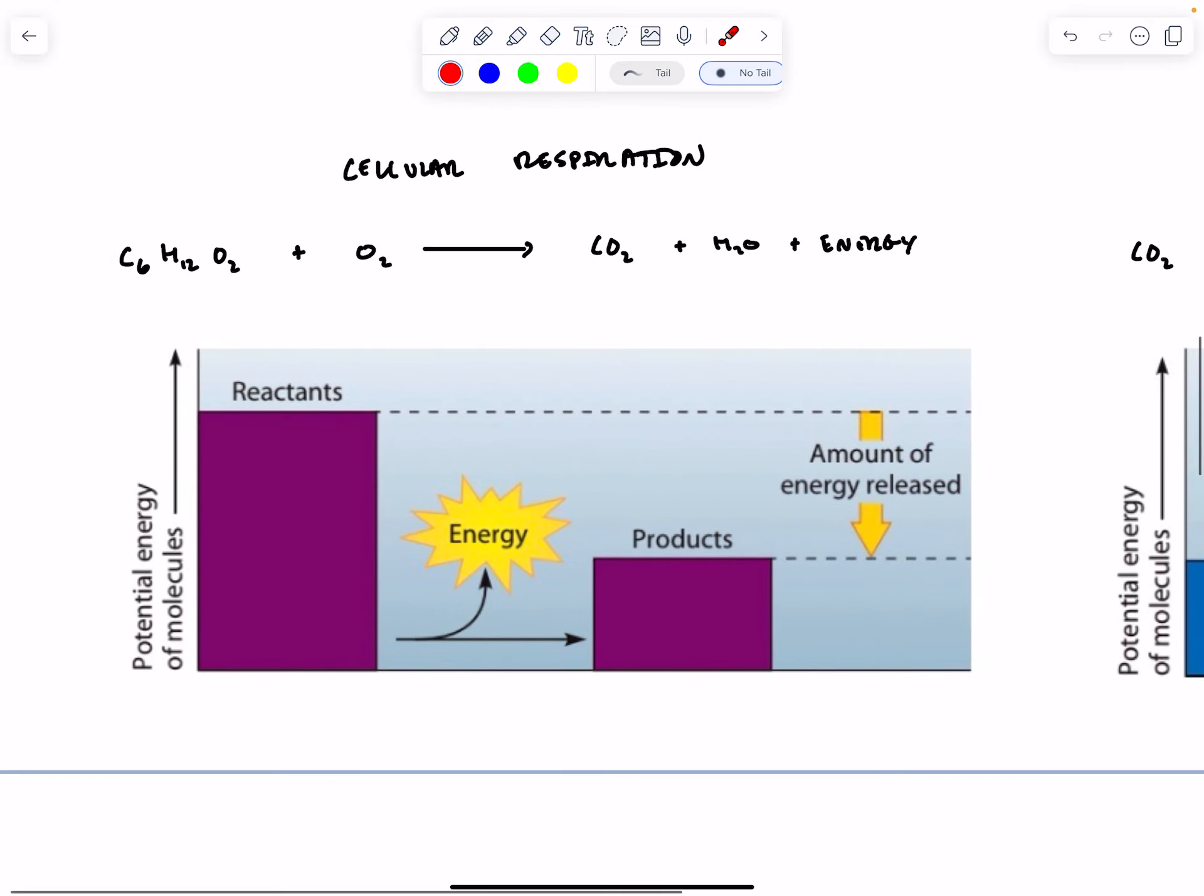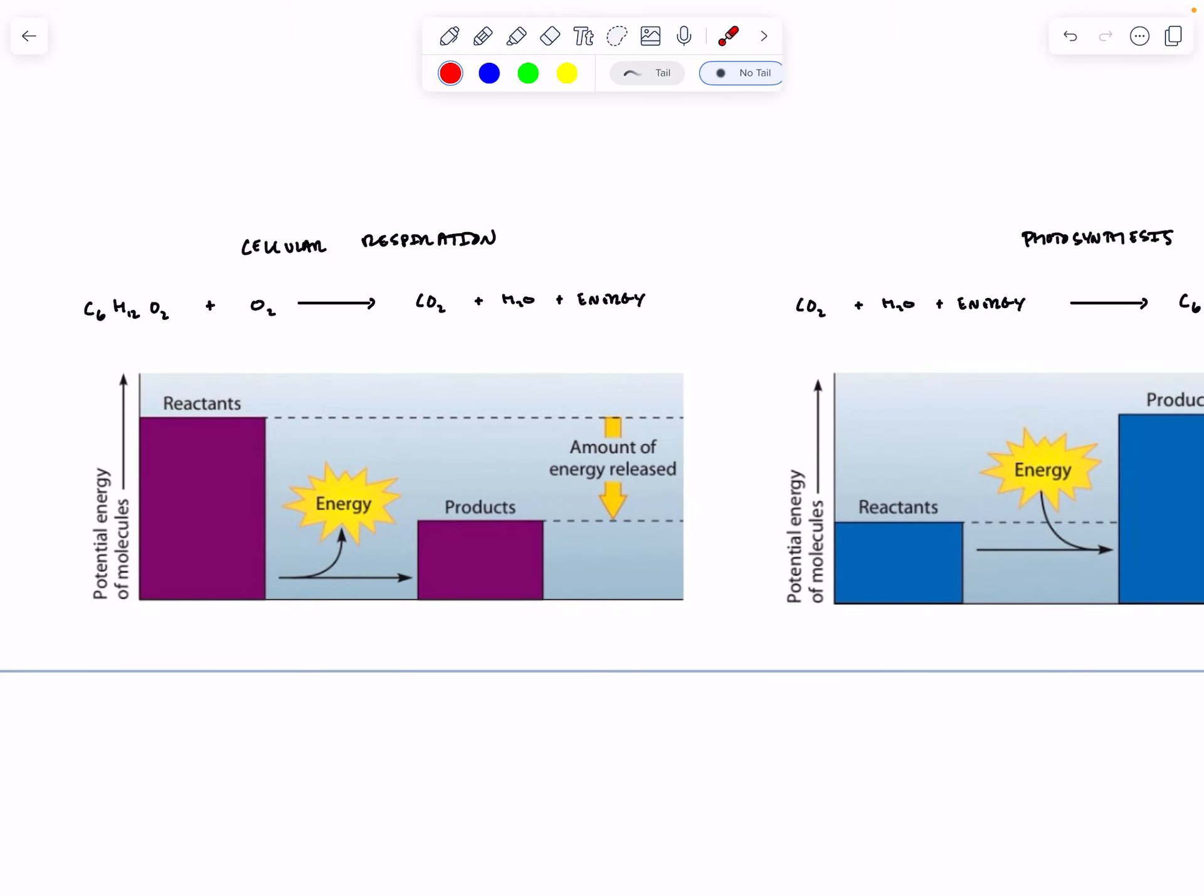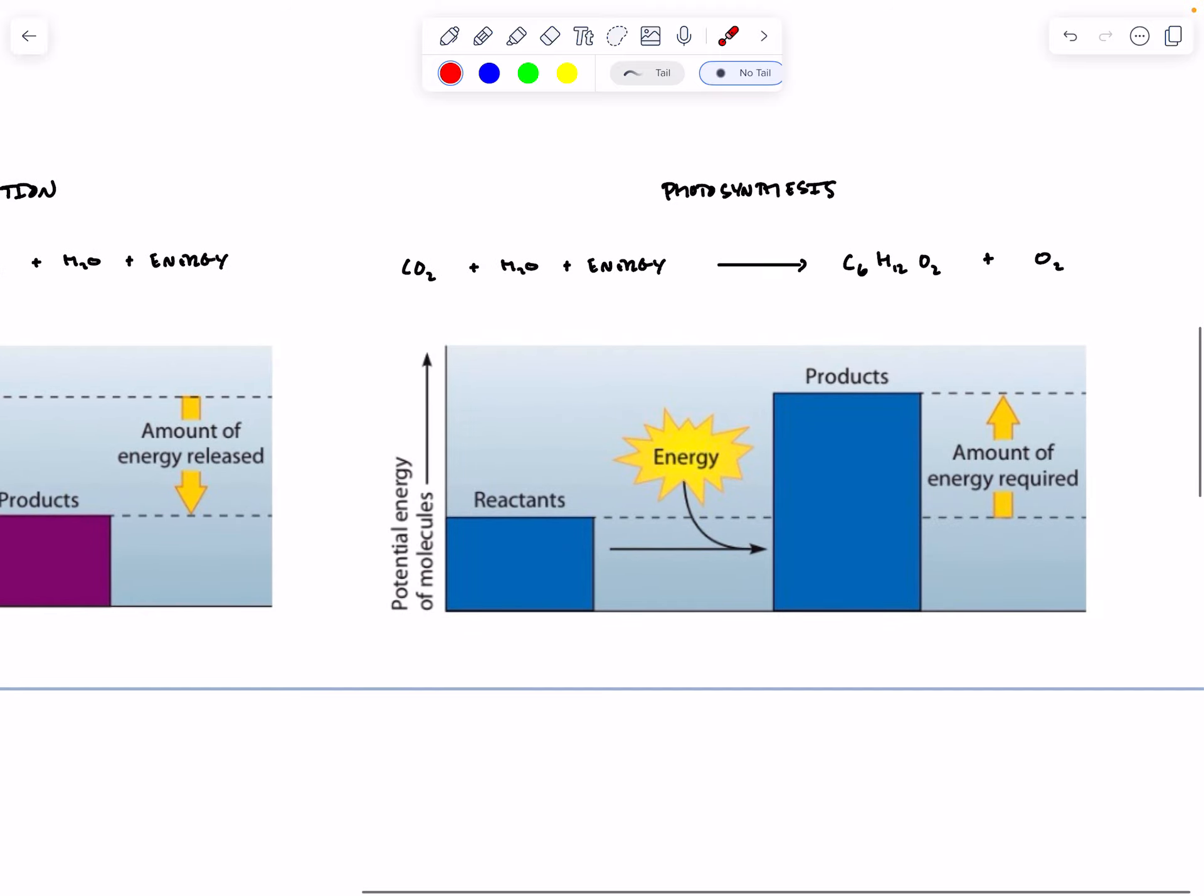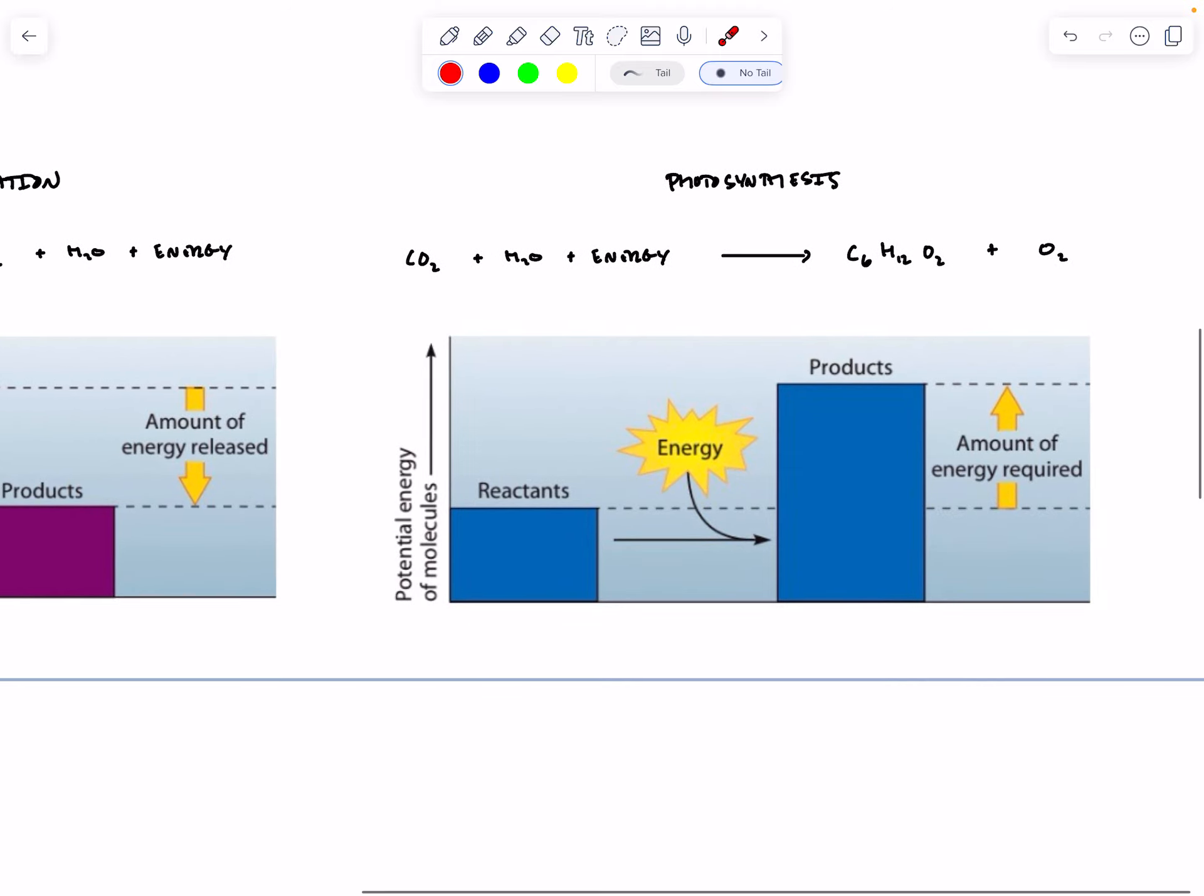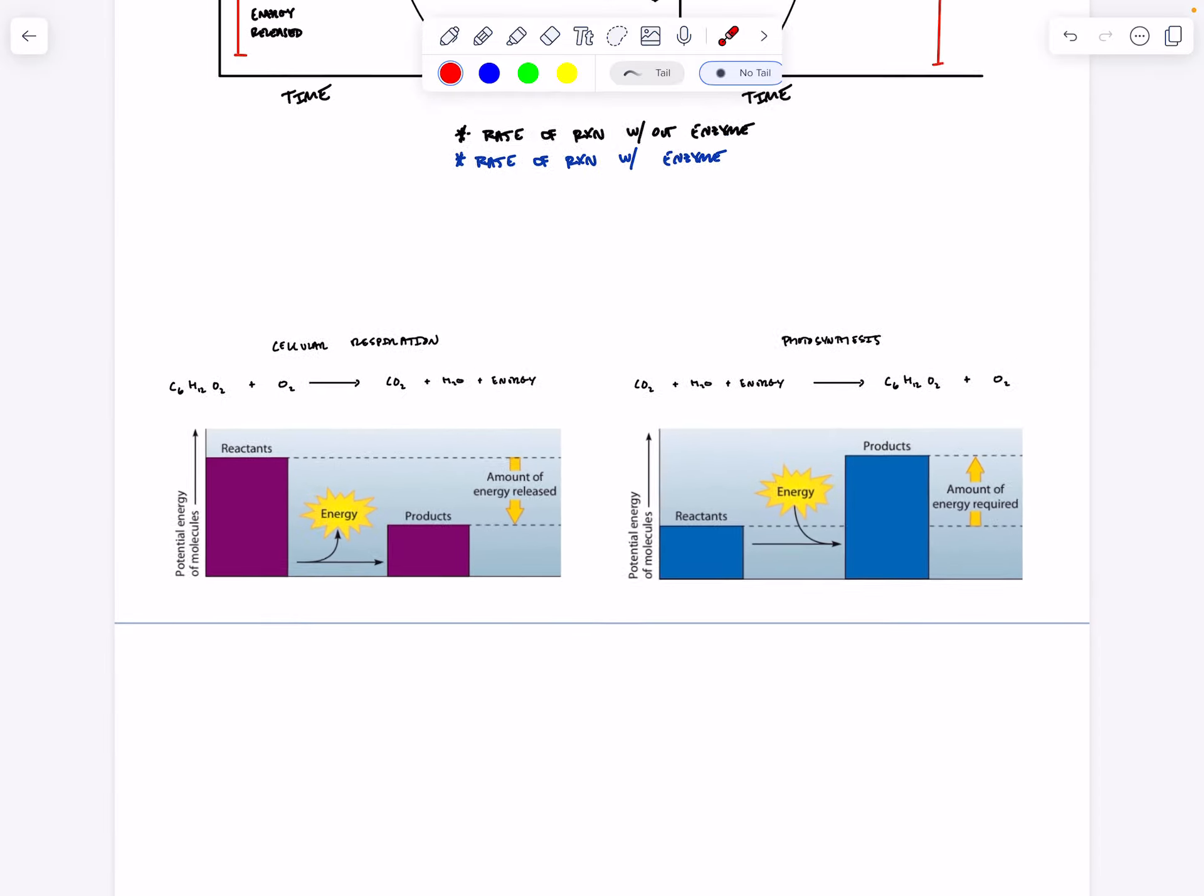Two great examples of exothermic and endothermic reactions are cellular respiration, where glucose is combusted with oxygen to make CO2, water, and energy is released. This is the energy difference between the reactants and the products, the amount of energy released. This would be a negative delta H. Photosynthesis is an example of an endothermic reaction, where the reactants that we start with, carbon dioxide and water, need an input of energy from the sun in order to build glucose and molecular oxygen. This would have a positive delta H.